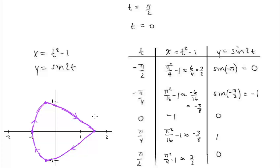At t equals negative pi/2, we're looking for the slope at that starting point of the curve. At t equals 0, we're at the point (negative 1, 0), looking for the slope there. At t equals pi/2, we're at the same endpoint (pi squared over 4 minus 1, 0) but traveling in the other direction since t is now positive pi/2.